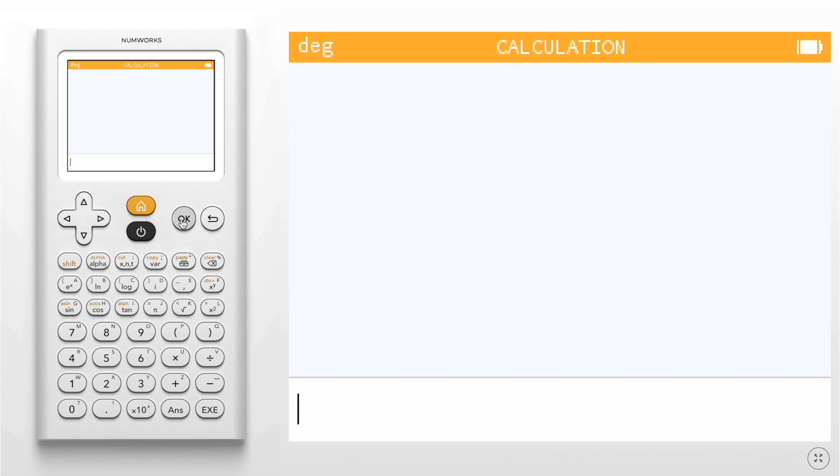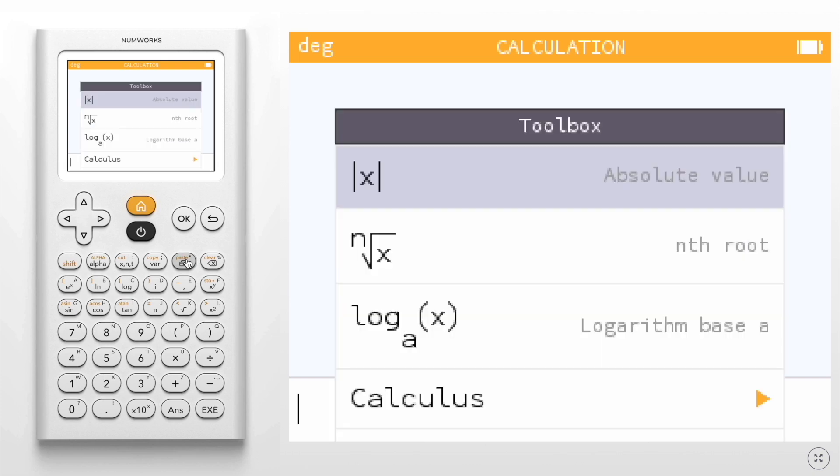From here, we need to enter the Toolbox menu by pressing the Toolbox button on the keypad. From this menu, we are going to use our navigation keys to scroll down until we get to Calculus and press OK.